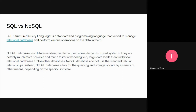NoSQL databases are mainly used across large distributed systems, and they are much more scalable than SQL databases. They are much faster and are easier to handle very large data than traditional databases. Unlike those databases, NoSQL cannot use standard tabular relationships, but it's a common misconception that NoSQL databases don't have any sort of data model — they do. It's just not the traditional relational way, but there is a data model.